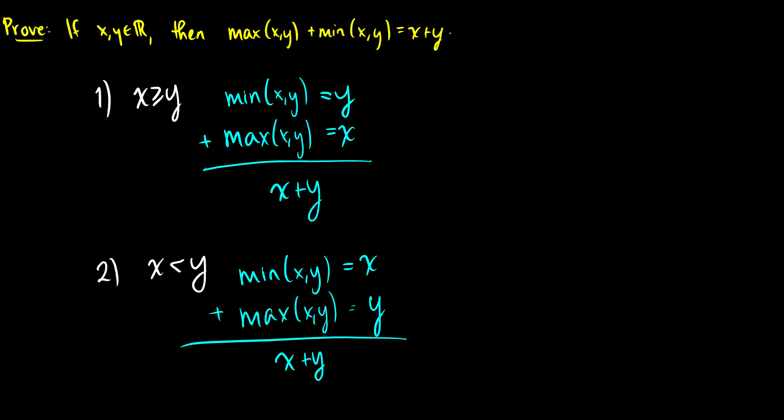So no matter the order of x and y, which one's greater, which one's smaller, if we add the maximum and the minimum together, we're going to get x plus y. So therefore we have completed the proof.